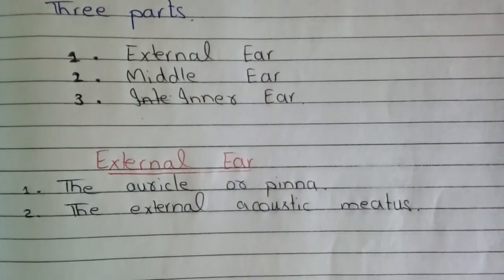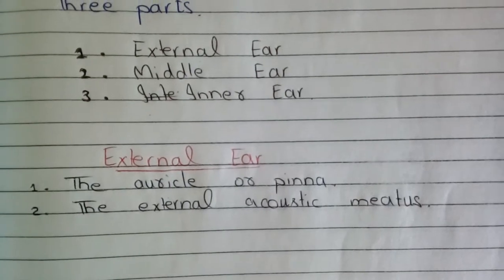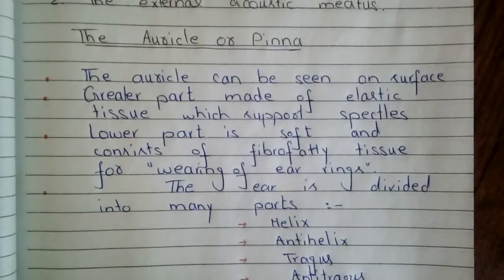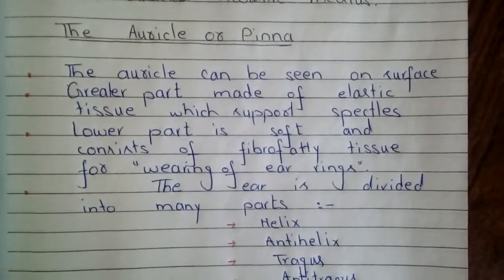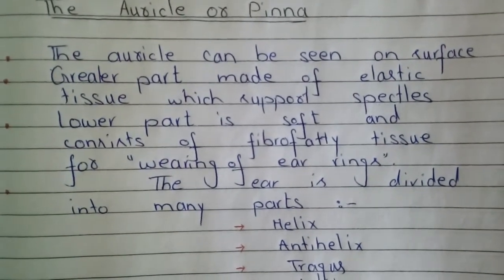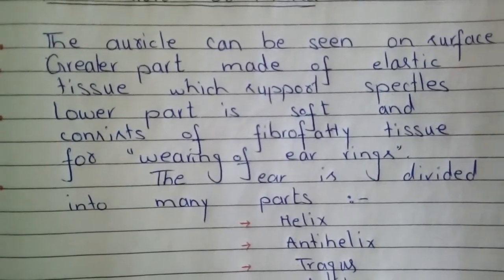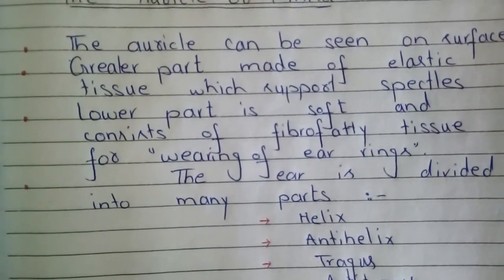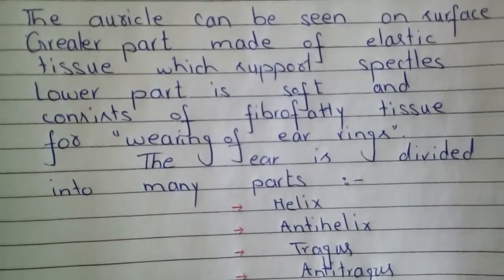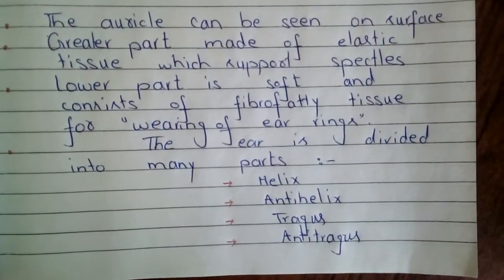The external ear consists of the auricle or pinna and the external acoustic meatus or canal. The auricle can be seen on the surface of the body. The greater part is made of elastic tissue which supports spectacles. The lower part is soft and consists of fibrofatty tissue for wearing of ear rings.